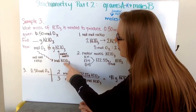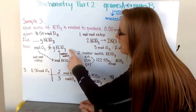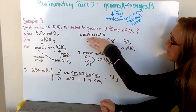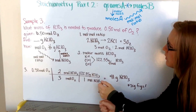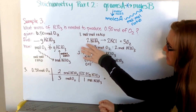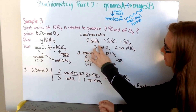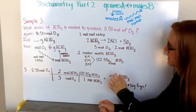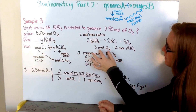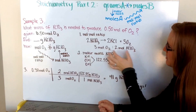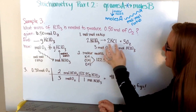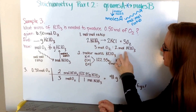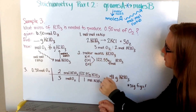I need my mole-to-mole ratio for my first conversion, and my molar mass of potassium chlorate for my second conversion. My mole ratio comes from my balanced chemical equation: 2 KClO₃ decomposes into 2 potassium chloride and 3 oxygen. So my mole ratio of oxygen to potassium chlorate is 3 moles of oxygen for every 2 moles of potassium chlorate — a 3 to 2 ratio.